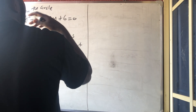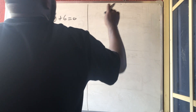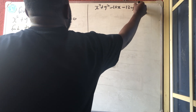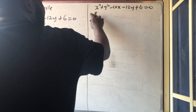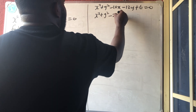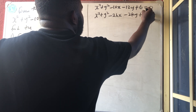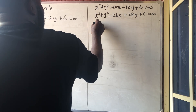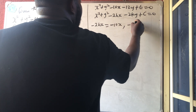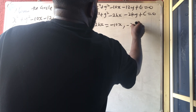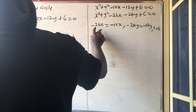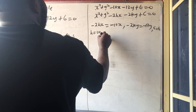To find the center and radius, we can use the formula method or the completing the square method. By the formula method, compare x squared plus y squared minus 10x minus 12y plus 6 equals 0 to the standard form x squared plus y squared minus 2hx minus 2ky plus c equals 0. So minus 2hx equals minus 10x, giving h equals 5; minus 2ky equals minus 12y, giving k equals 6; and c equals 6.